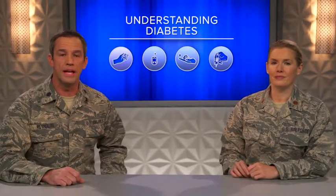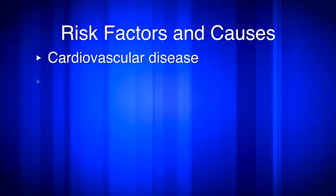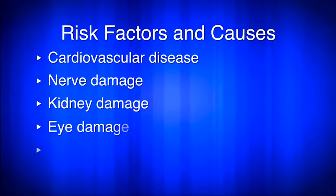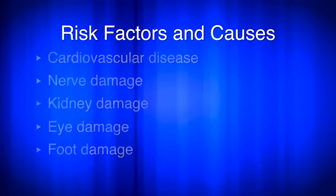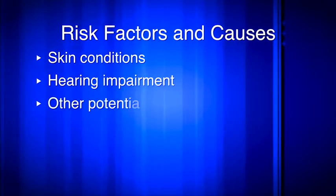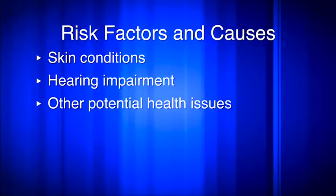You can also check out symptoms, tests, and diagnosis if you think you or someone you know might have type 2 diabetes. We also cover complications that can result from type 2 diabetes, such as cardiovascular disease, nerve damage, kidney damage, eye damage, foot damage, skin conditions, hearing impairment, and other potential health issues.